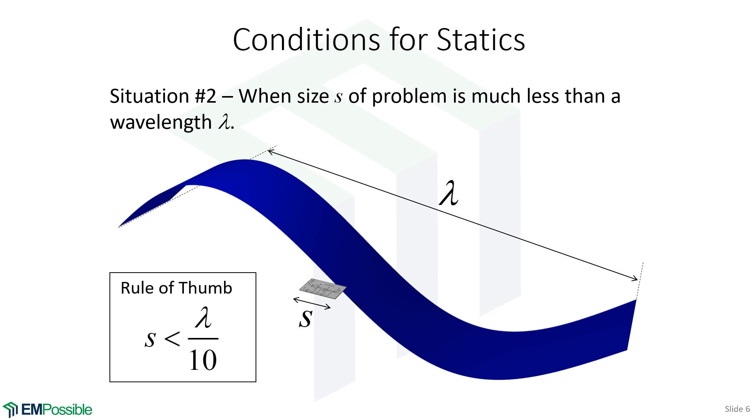The rule of thumb here is if the size of your device is less than a tenth of a wavelength, then we can apply ordinary circuit theory. That's just a rule of thumb. There may be times where if you're interested in six digits of precision, this isn't good enough, and maybe you should ensure that your circuit is a hundredth of a wavelength. But roughly, if you're less than a tenth of a wavelength, you can apply the static approximation.